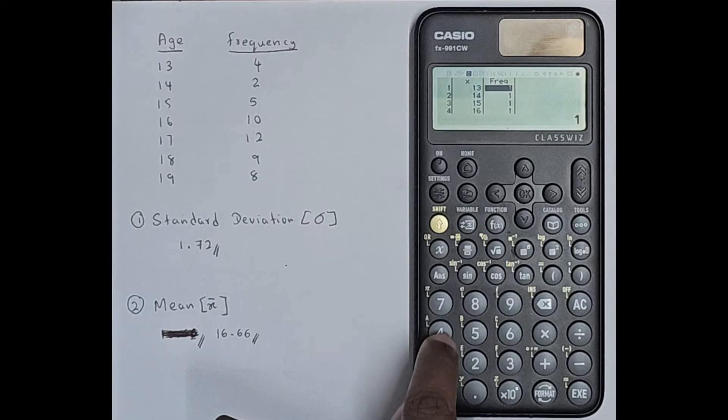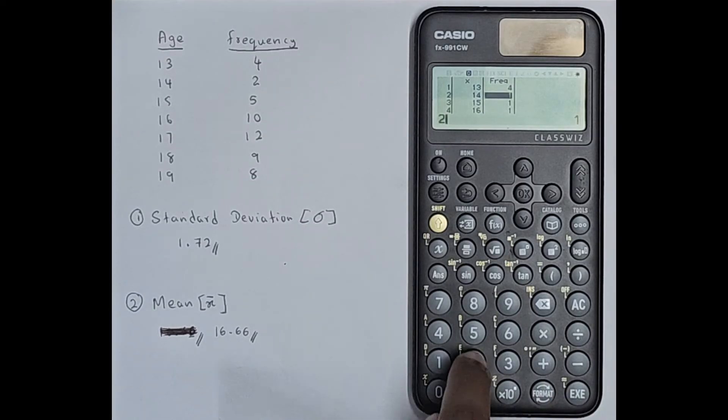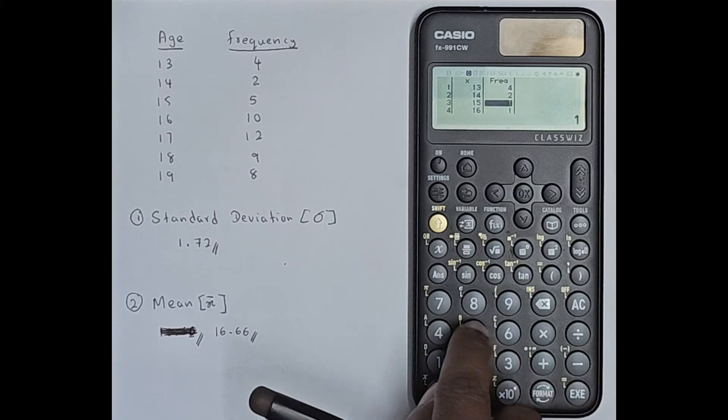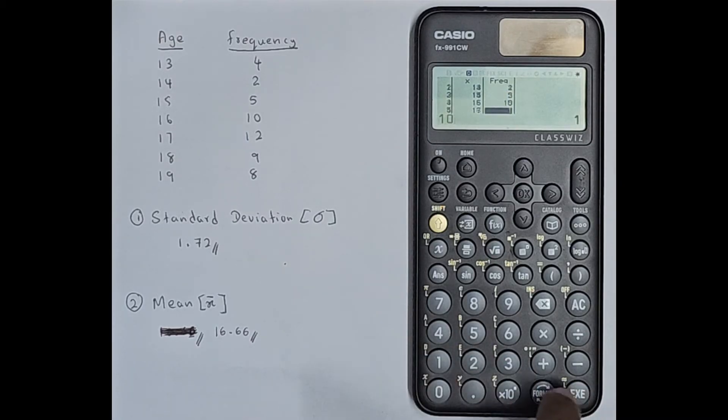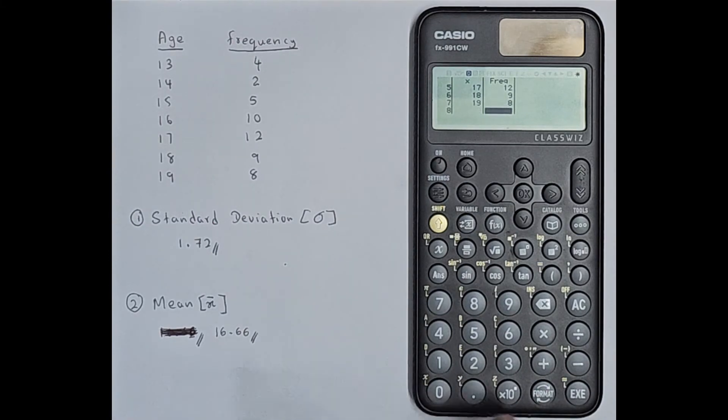So now you can enter the values for frequency: 4 exe, 2 exe, 5 exe, 10 exe, 12 exe, 9 exe, 8. Make sure to enter exe. Most of the students are not entering that, they are missing it. If you miss it you will not get the correct answer.